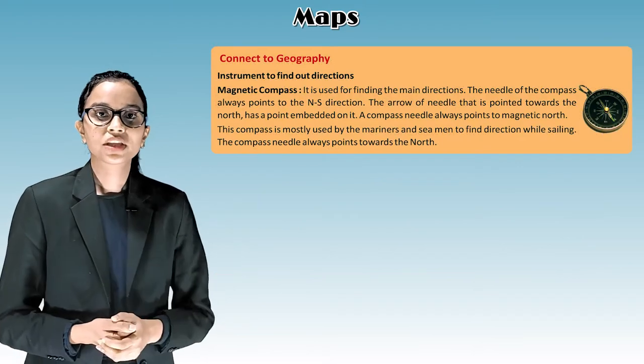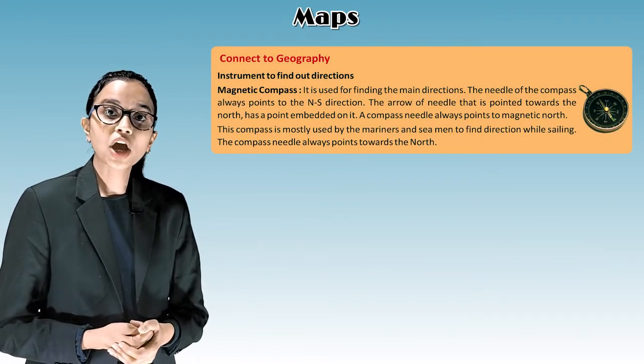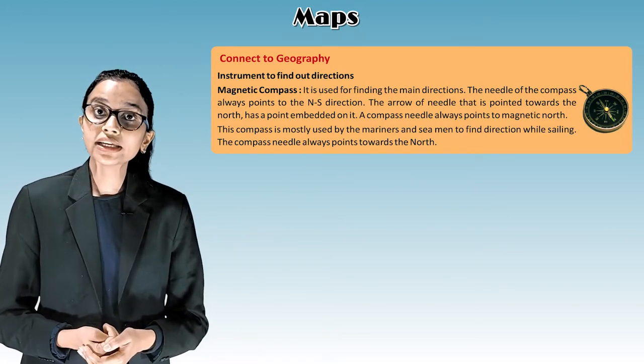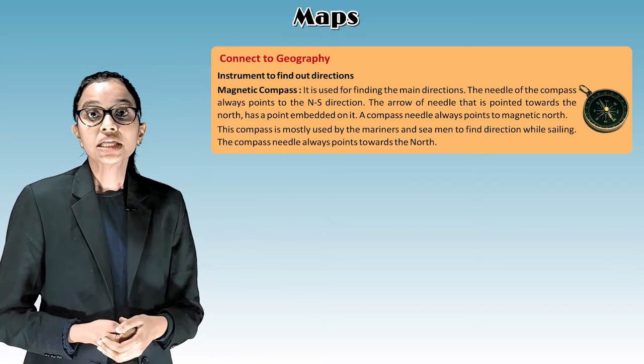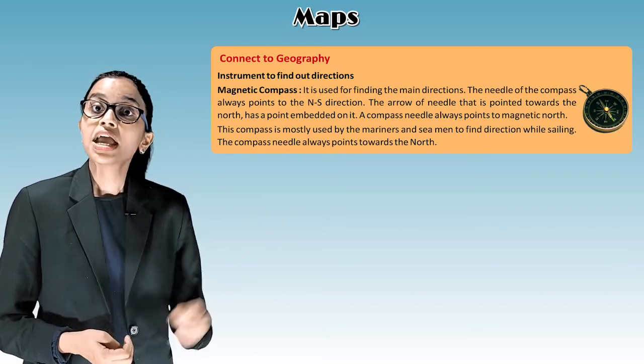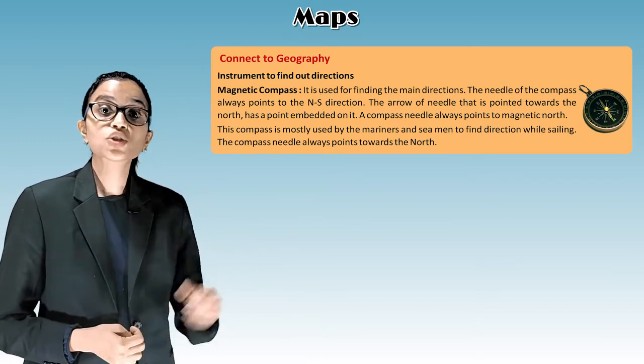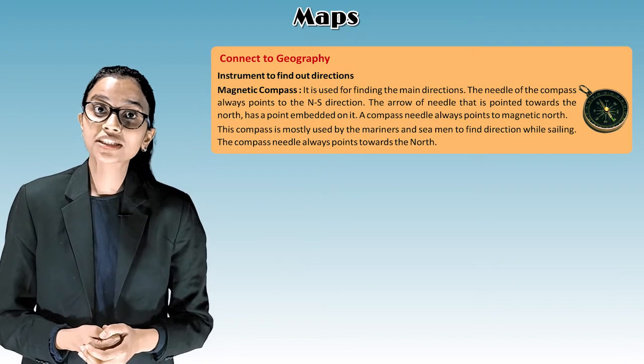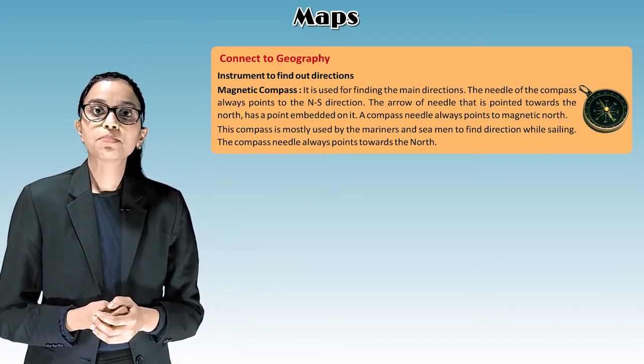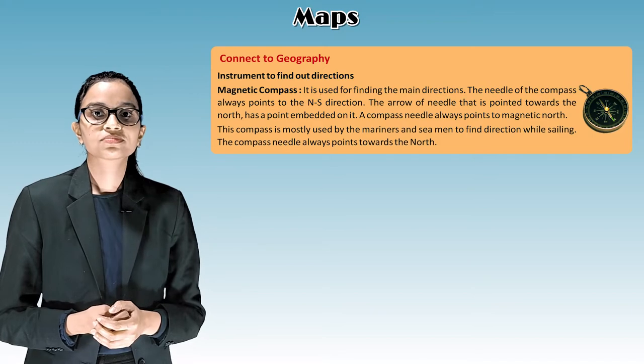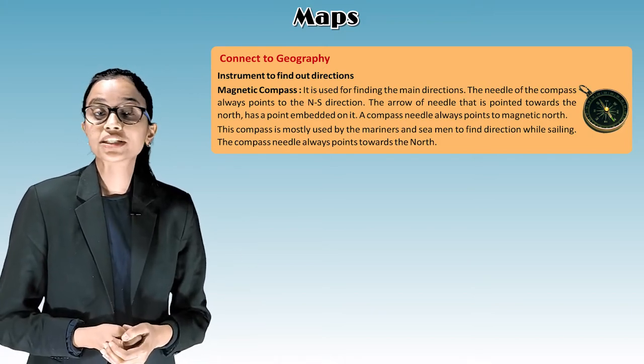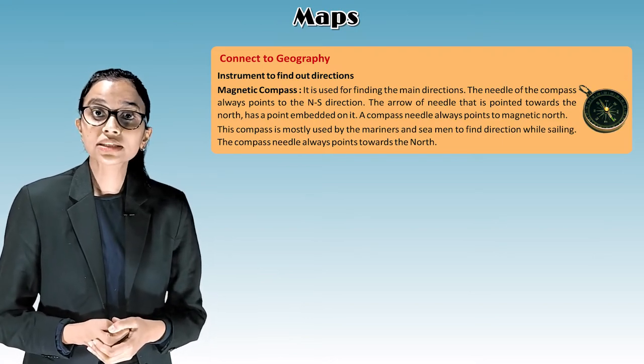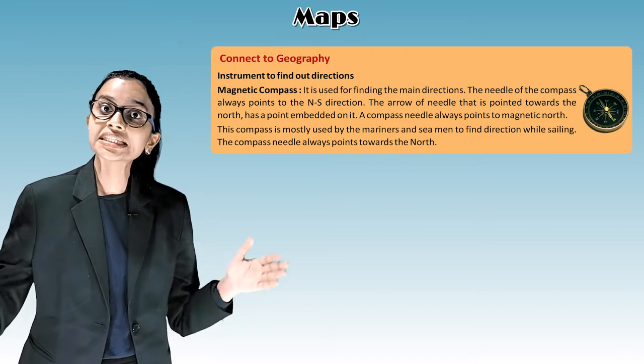Connect to geography. Instrument to find out direction, that is magnetic compass. It is used for finding the main directions. The needle of the compass always points to the north-south direction. The arrow of the needle that is pointed towards the north has a point embedded on it. A compass needle always points to magnetic north. This compass is mostly used by the mariners and seamen to find direction while sailing.